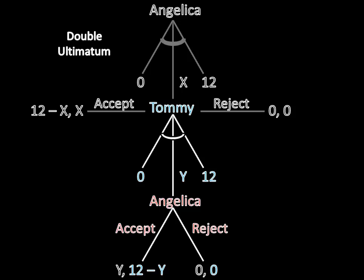Angelica still has rational self-incentive to accept his offer. One cookie is better than zero. And so Tommy's subgame perfect offer here is to only give Angelica one cookie, just like in the single ultimatum version of the game that we went over last time. And for clarity, I'm just going to replace the Y with a one.